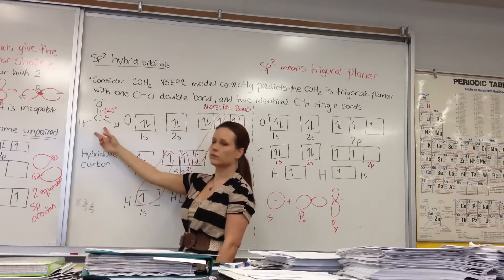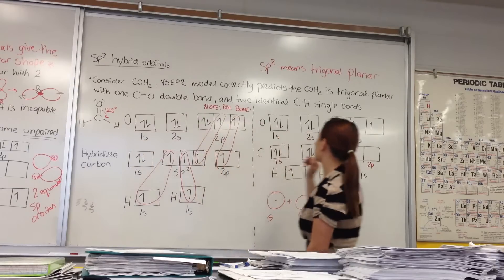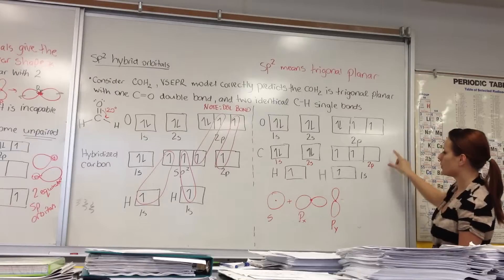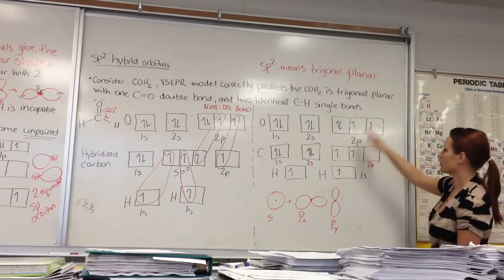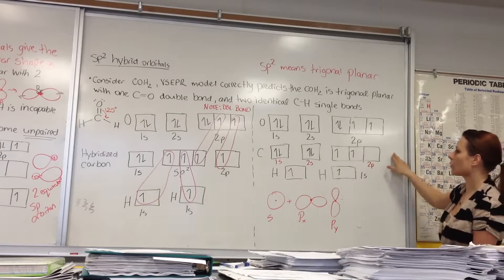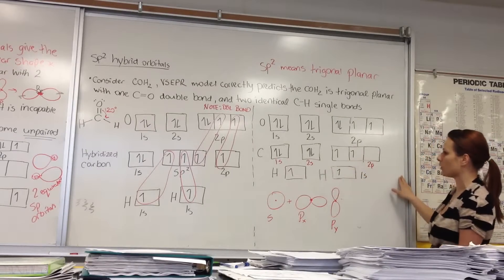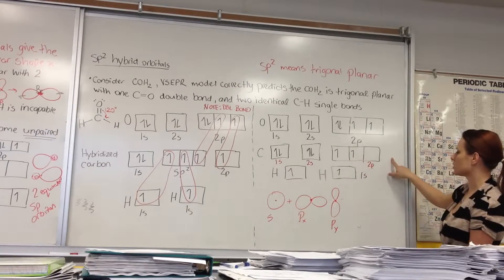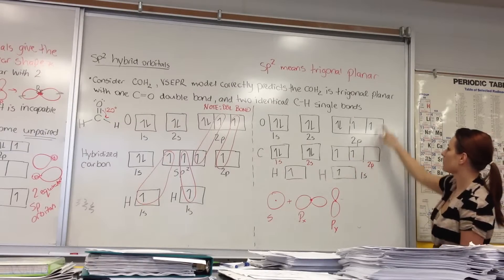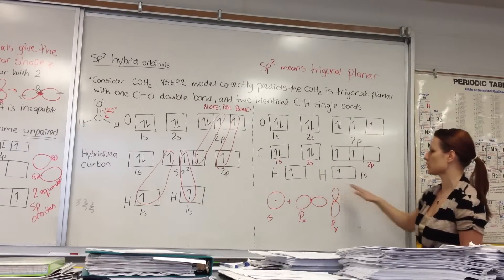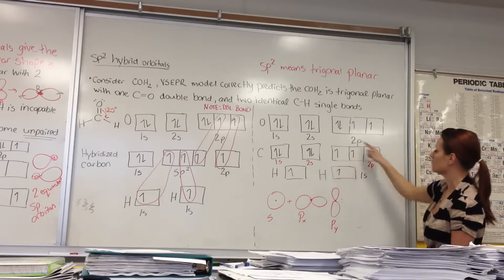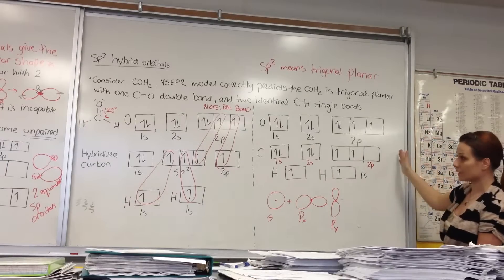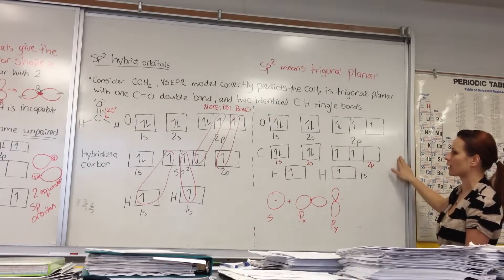If we draw the box diagrams of oxygen, carbon, and hydrogen, we wouldn't be able to account for that trigonal planar shape if we leave the carbon in its ground state. If we left it as is, the only two unpaired electrons are in the 2P orbitals, which would either double bond with only the oxygen — leaving the two hydrogens unpaired — or bond with each other, meaning it wouldn't be bonded with oxygen. But it is, so we have to explain how that actually occurs.